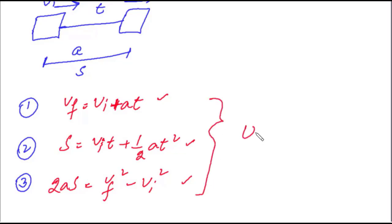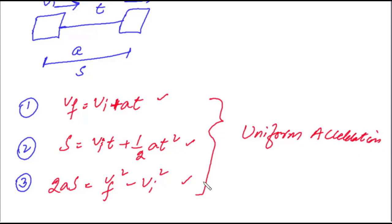جیسے میں نے شروع میں بتایا، یہ equations صرف ایسے object کے لئے apply ہو سکتی ہیں جو uniform acceleration کے ساتھ move کر رہا ہو۔ اسی لئے ہم انہیں equations of uniformly accelerated motion کہتے ہیں۔ اب ان تینوں equations کو میں یہاں دوبارہ لکھوں گا تاکہ ہم دیکھ سکیں کہ یہ کہاں استعمال ہوتی ہیں۔